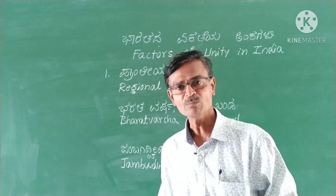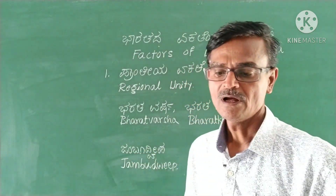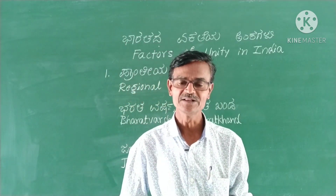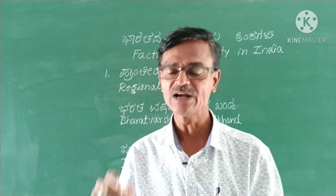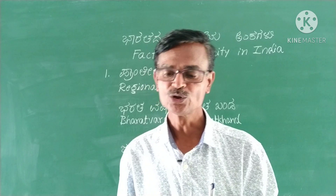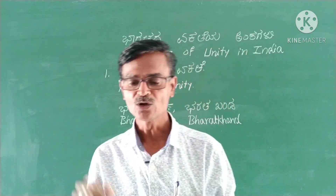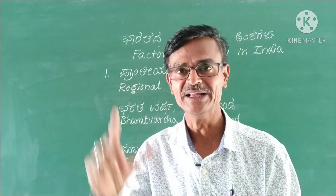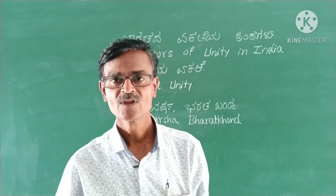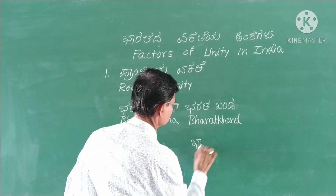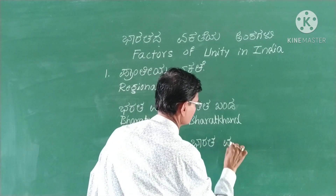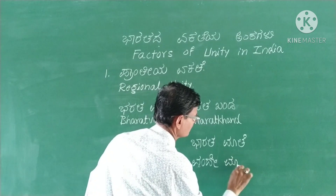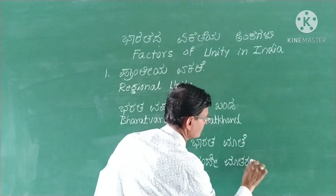so it was called Bharata Kanda or Bharata Varsha. Earlier, this land was filled with Jambu Rukshakal, so it was also known as Jambu Dweepa. This indicates geographical unity. Bharata Mathe, Vande Mathe.